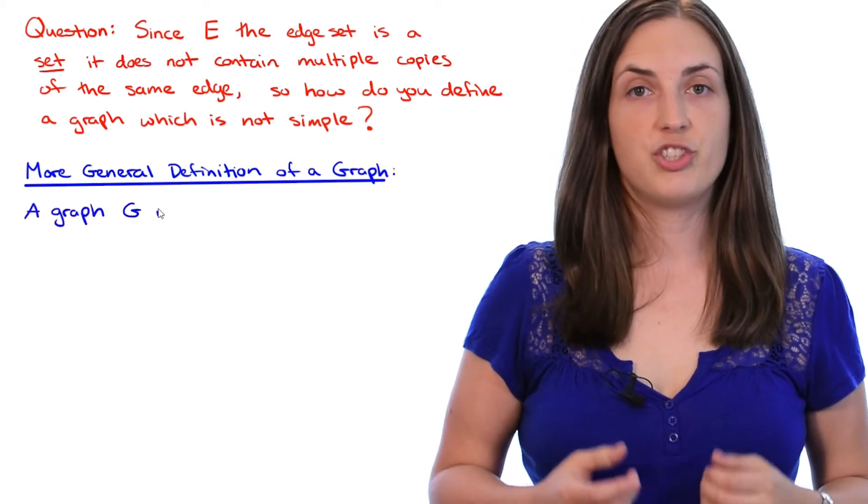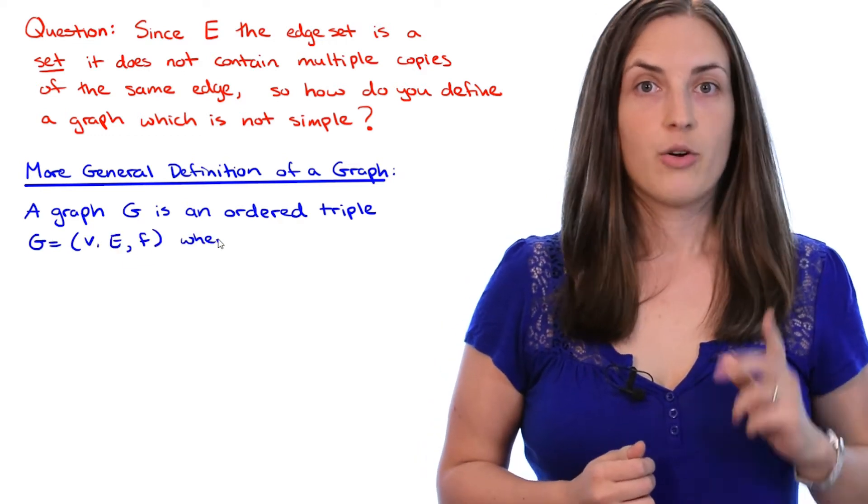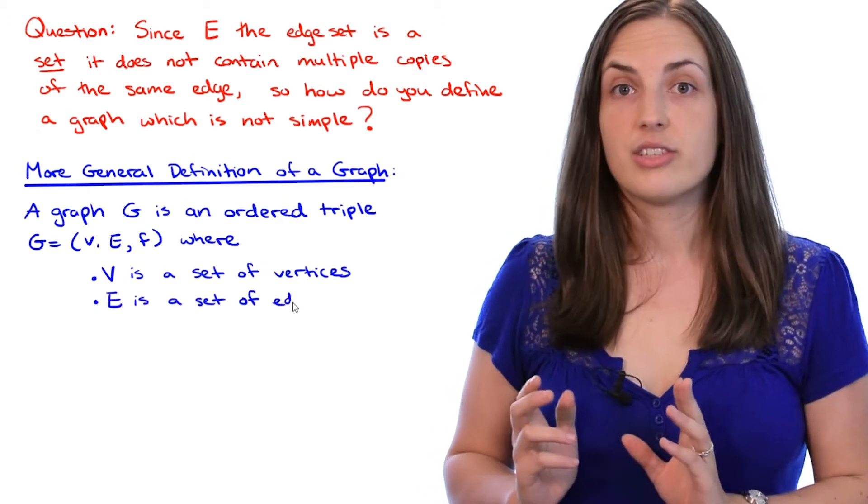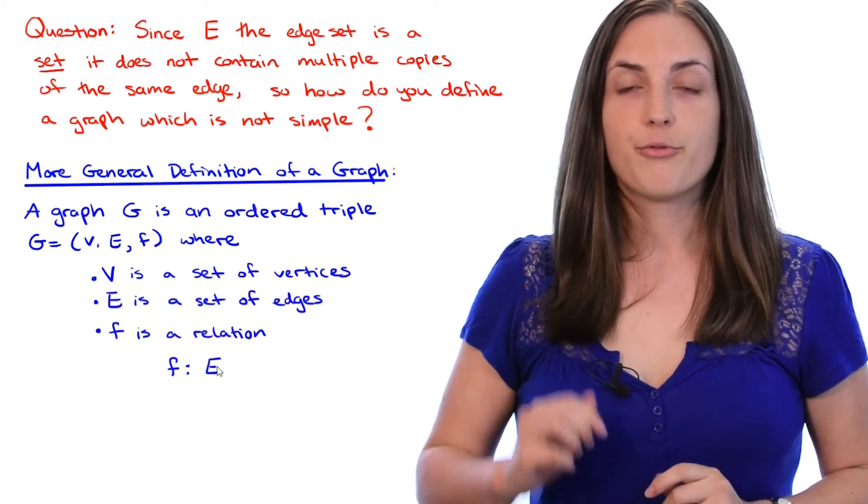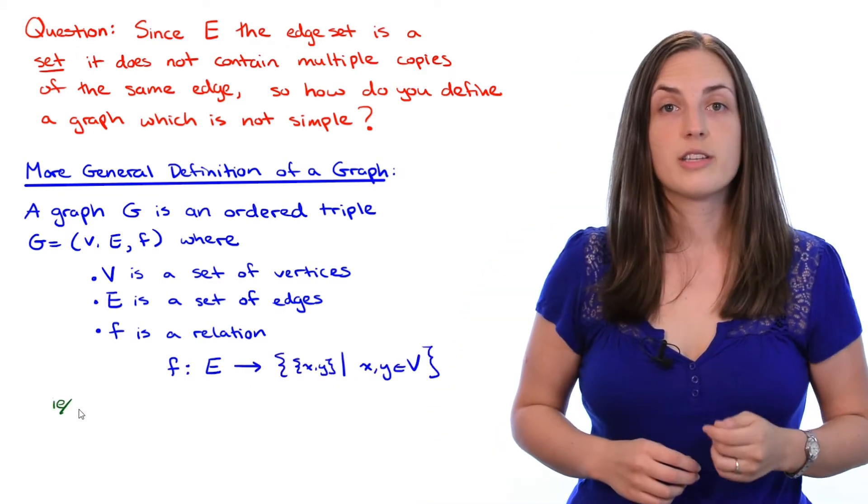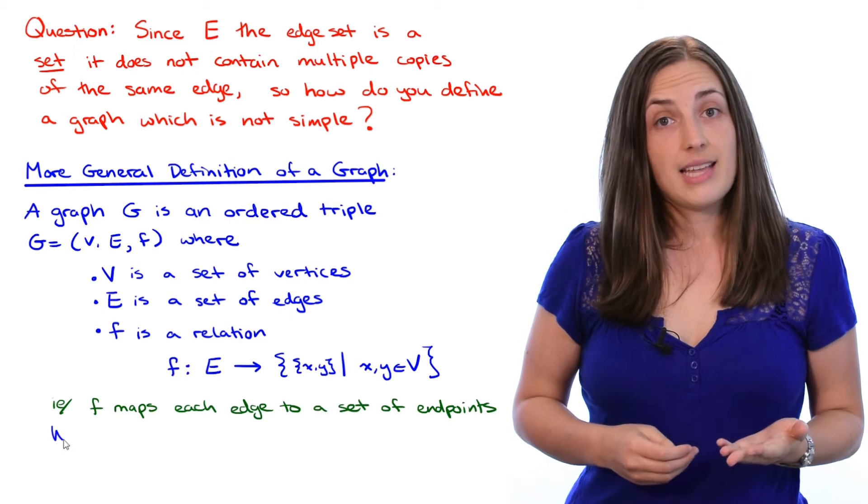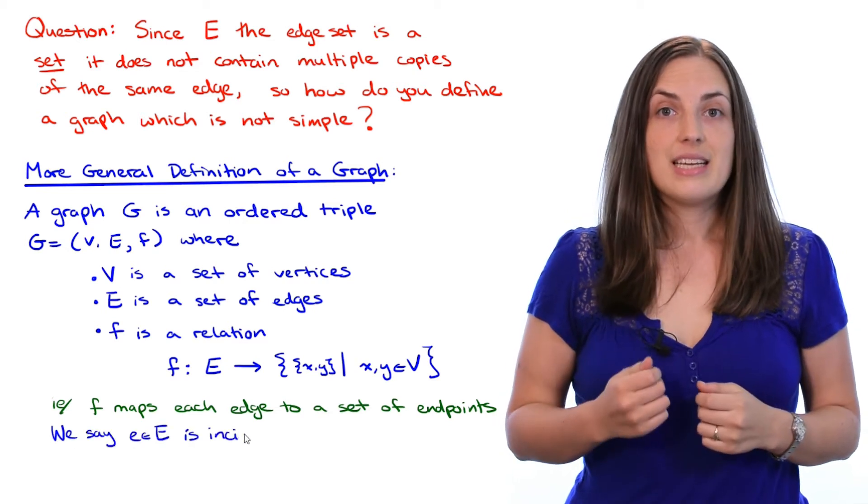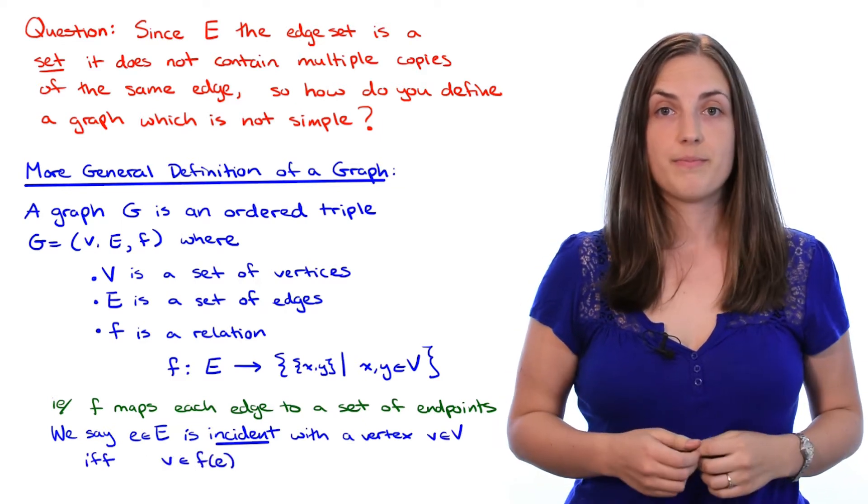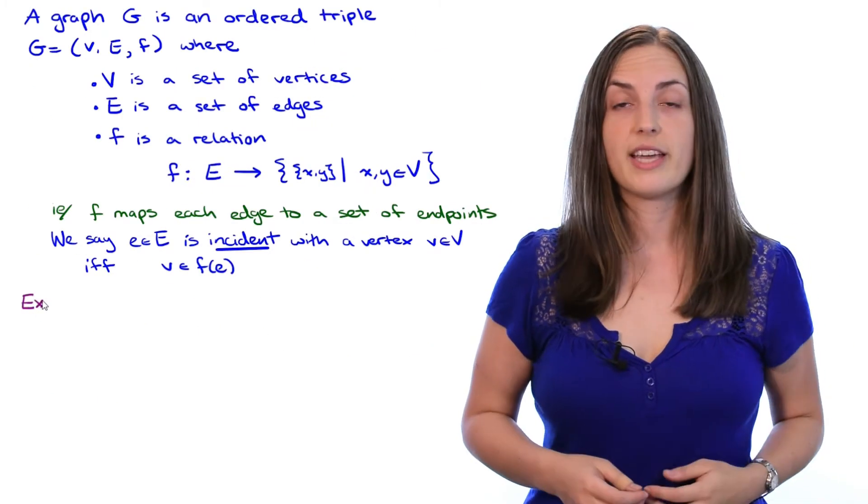More generally, a graph G is an ordered triple (V, E, F), where V is still a set of vertices and E is still a set of edges, but F is a mapping from E to the set of possible end vertices. In other words, F maps each edge to a set of endpoints. We say that an edge E is incident with a vertex V if the vertex V belongs to F of E, where E got mapped. Now that sounds a little bit abstract, so let's start by looking at an example.